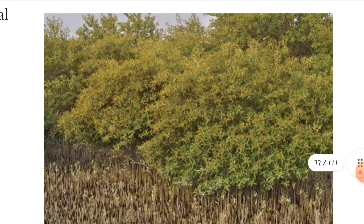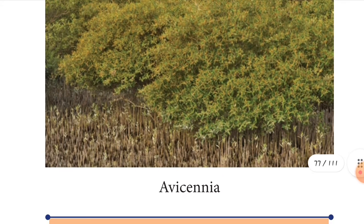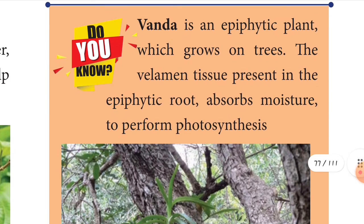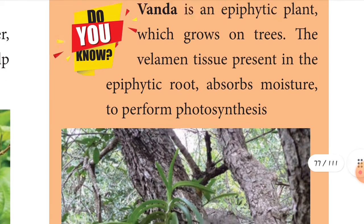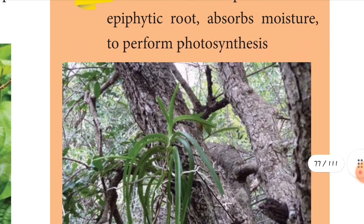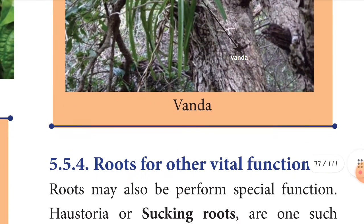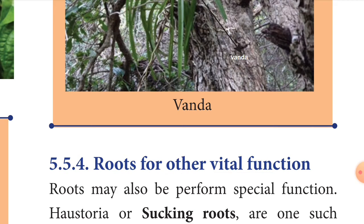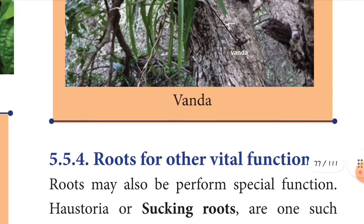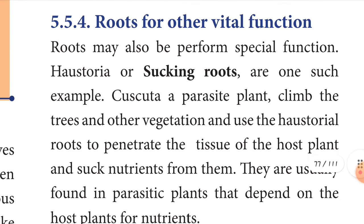See the Vanda tree children. Vanda is an epiphytic plant which grows on trees. The spongy tissue present in the epiphytic roots absorbs moisture to perform photosynthesis. That is the main process of this Vanda tree, and it gives support to the other plants it grows on.